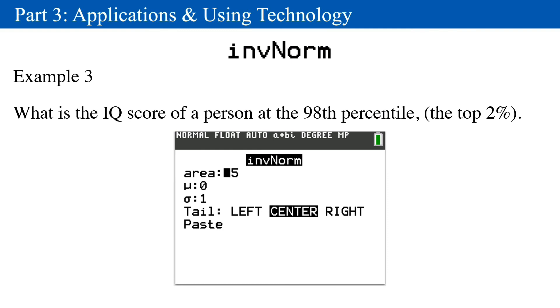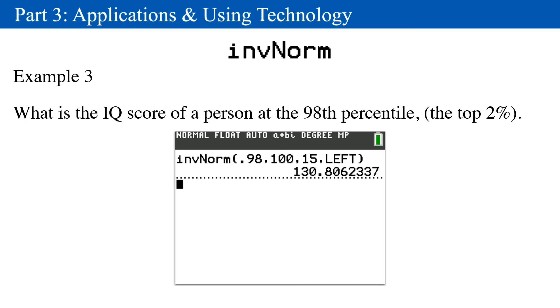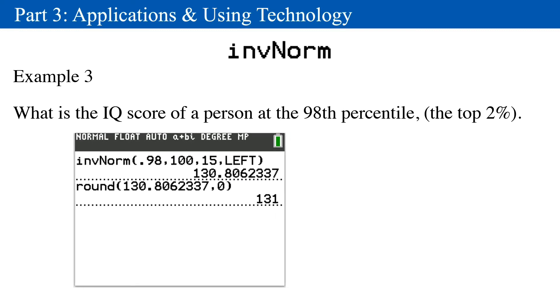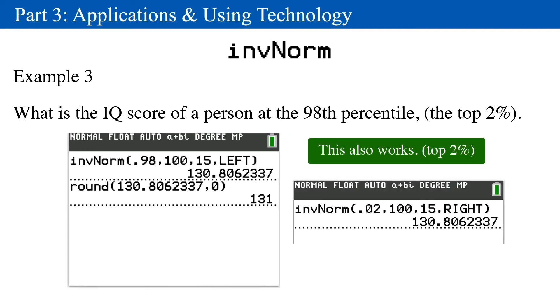Example 3. Suppose you'd like to know the IQ of people who score at the 98th percentile. Just enter 0.98, 100 for the mean, and 15 for the standard deviation. The answer must be rounded up to 131, because IQ scores don't have decimals.